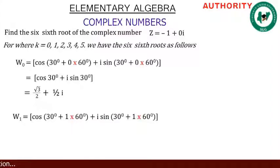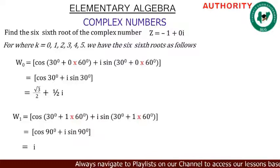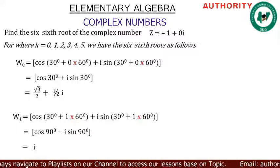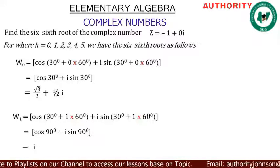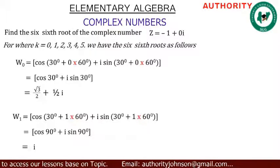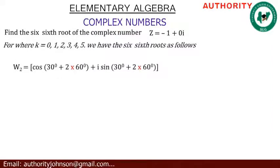For k = 1: w₁ = cos(30 + 1·60°) + i·sin(30 + 1·60°). One times 60 is 60, and 60 + 30 = 90. So we have cos(90°) + i·sin(90°). cos(90°) = 0 and sin(90°) = 1, so w₁ = i.